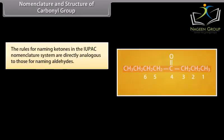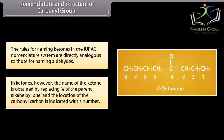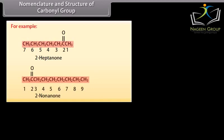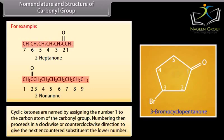The rules for naming ketones in the IUPAC nomenclature system are directly analogous to those for naming aldehydes. In ketones, however, the name of the ketone is obtained by replacing '-e' of the parent alkane by '-one', and the location of the carbonyl carbon is indicated with a number. For example, 2-heptanone, 2-nonanone. Cyclic ketones are named by assigning the number 1 to the carbon atom of the carbonyl group; numbering then proceeds in a clockwise or counterclockwise direction to give the next encountered substituent the lower number.